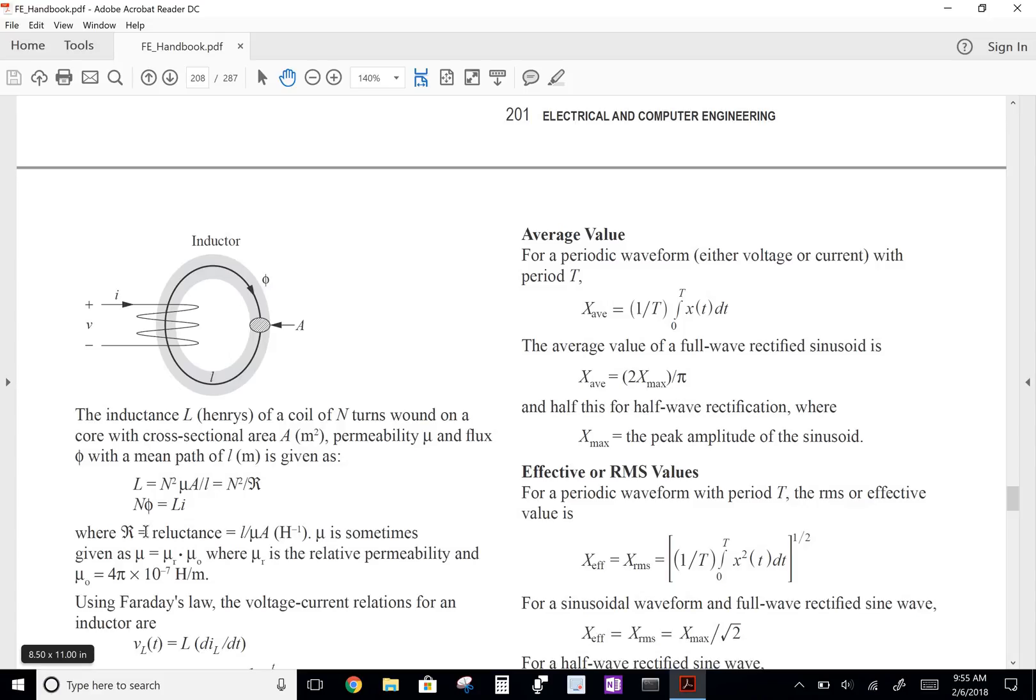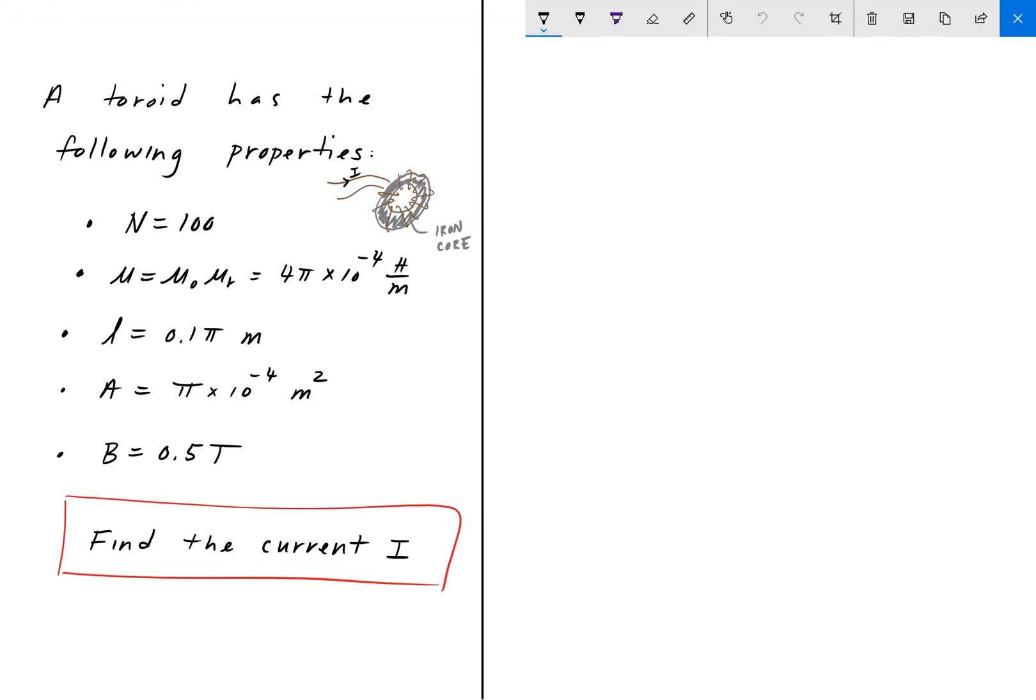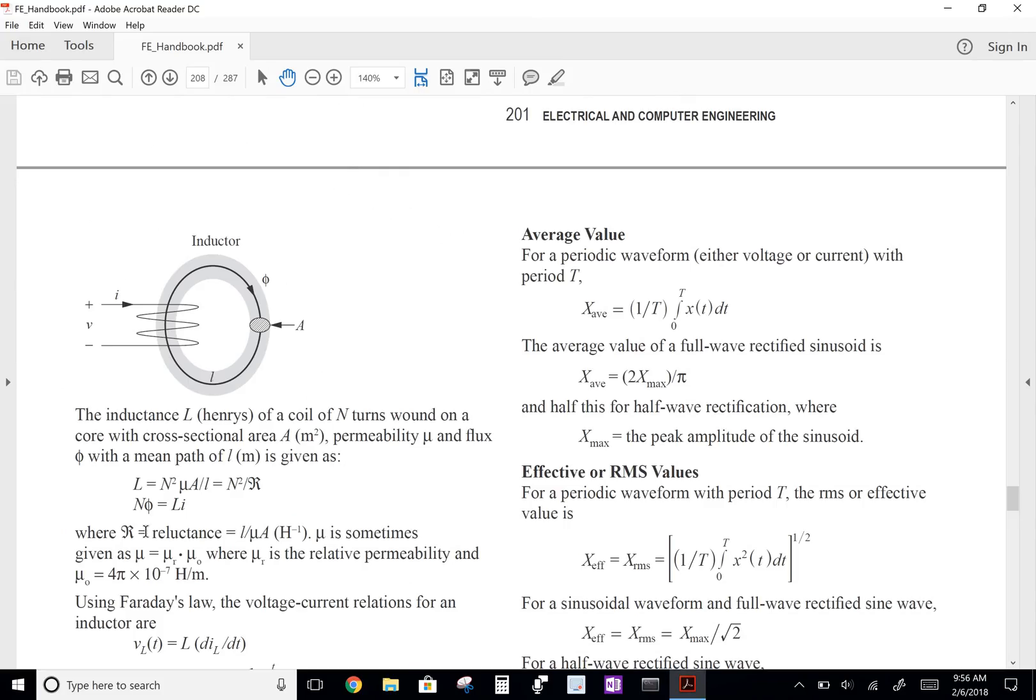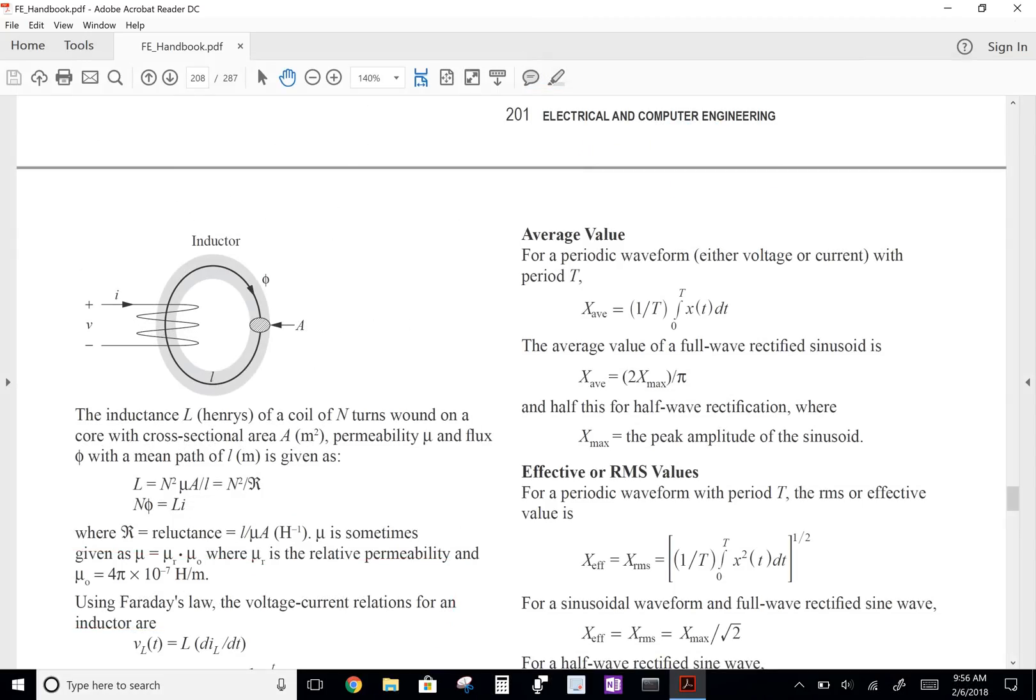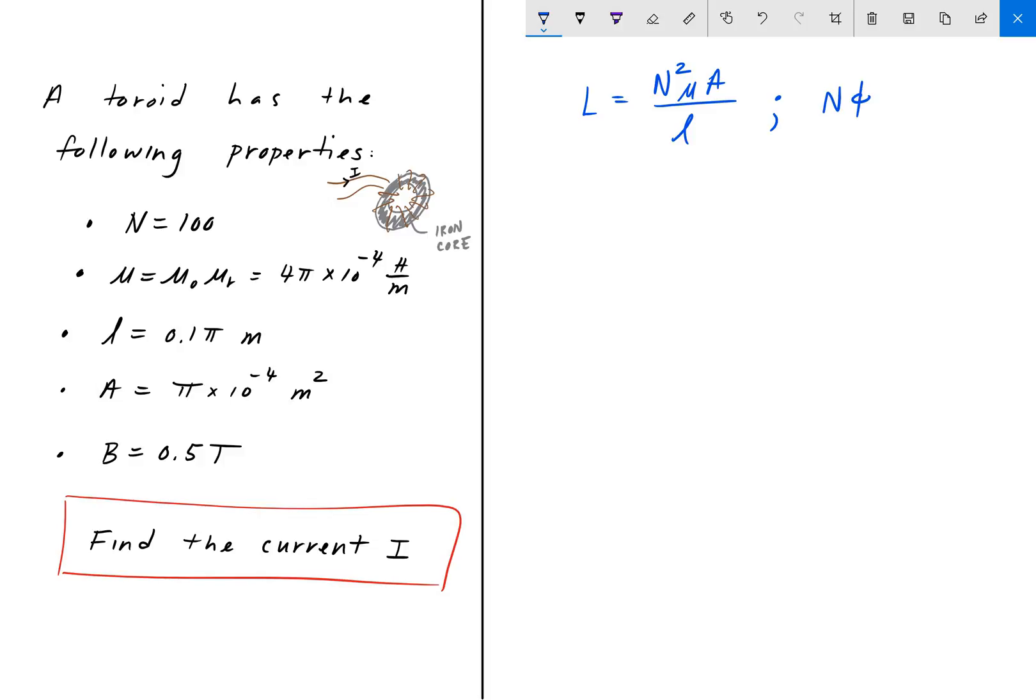That's what we're going to do. We're going to copy those down. Let's change colors here. We're given that L inductance was N²μA divided by L. And then we were also given that N·flux is equal to LI.